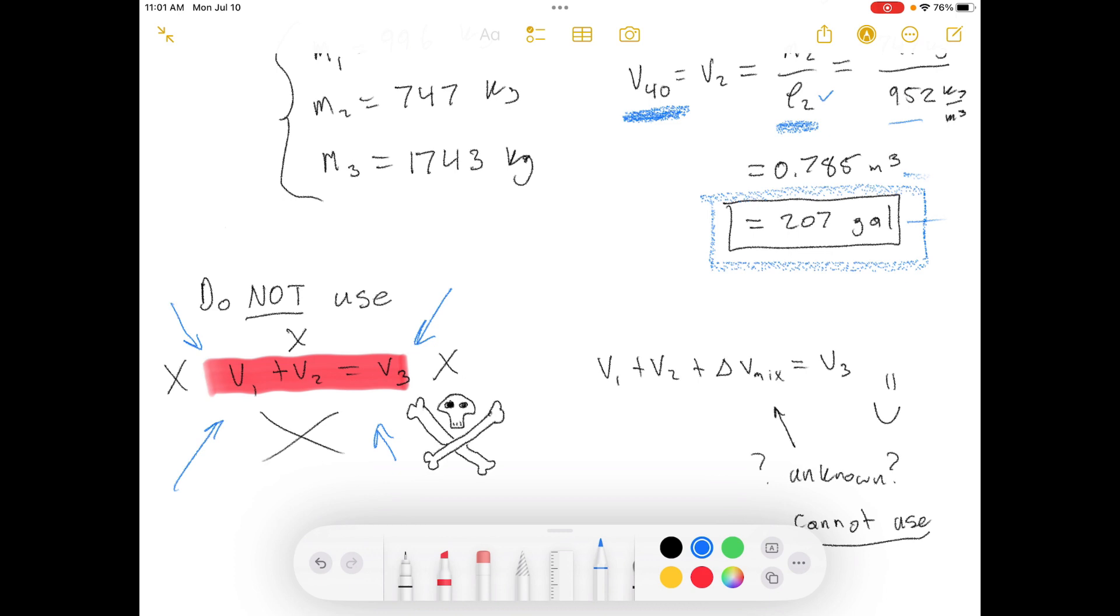Okay, so in reality this is the actual equation: volume one plus volume two equals a change in the mixture volume, or plus the change in mixture volume equals the volume three.